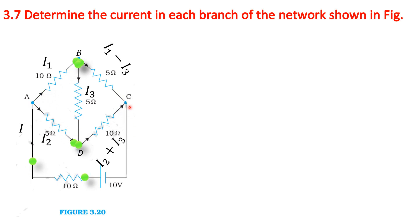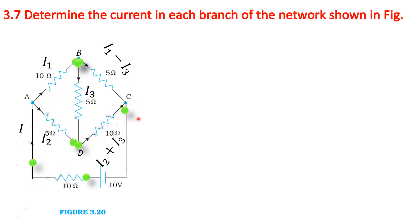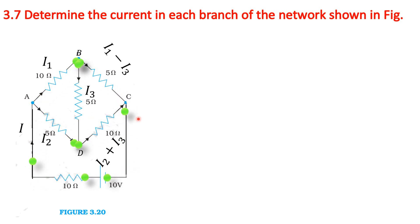From junction C, I1 minus I3 and I2 plus I3 are combined and the total current I passes to the negative terminal.